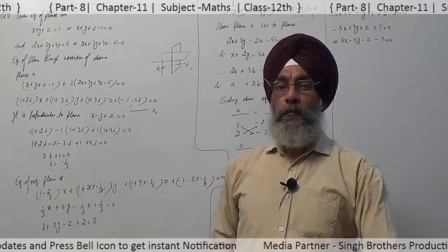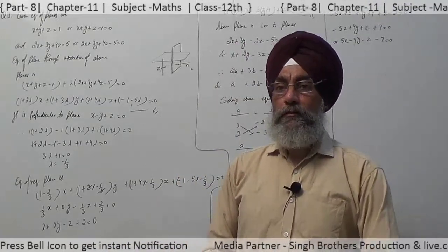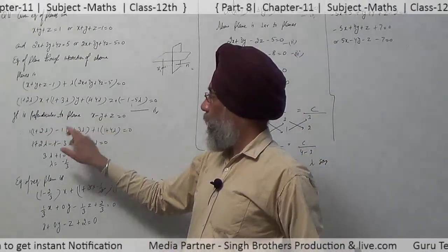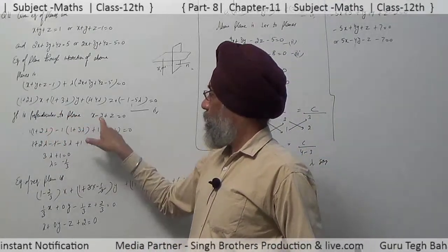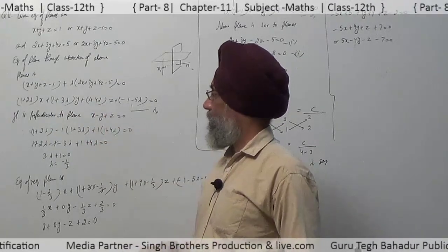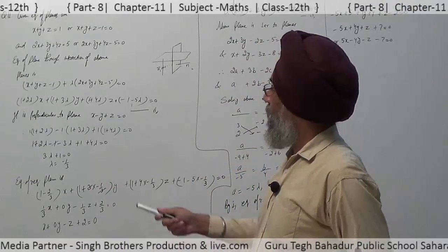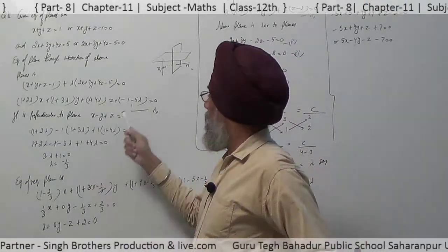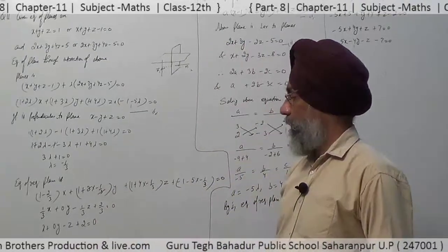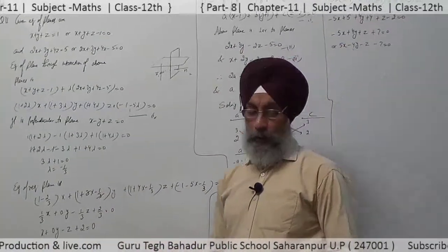Taking the sum of products of the corresponding directional ratios, we get: (1 + 2λ)(1) + (1 + 3λ)(-1) + (1 + 4λ)(1) = 0. Solving, the value of lambda is -1/3. Substituting into the equation, we get the equation of the plane: x + 0y - z + 2 = 0. That is the required equation of the plane.